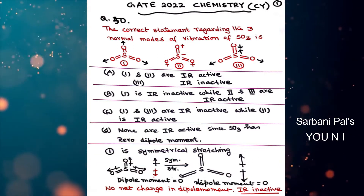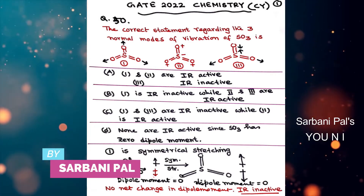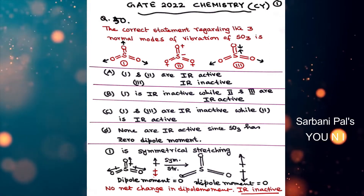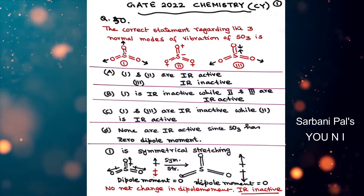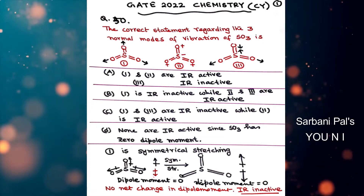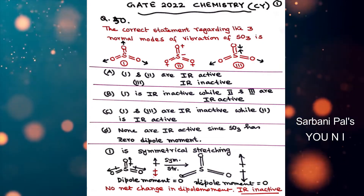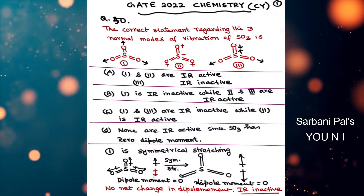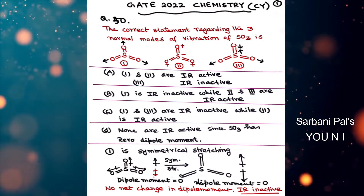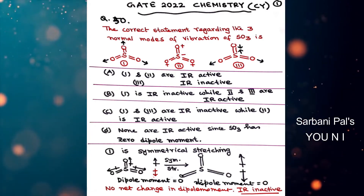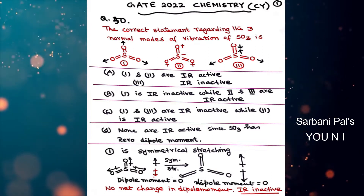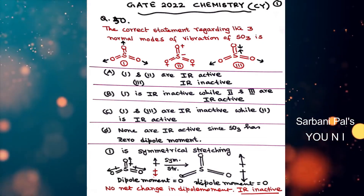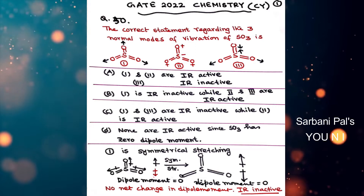To begin with, question number 50 which came in the year 2022: the correct statement regarding the three normal modes of vibration of sulphur trioxide. There are three vibrational modes of sulphur trioxide — 1, 2, and 3 — and based on these, four statements A, B, C, and D are given. We have to identify the correct statement.